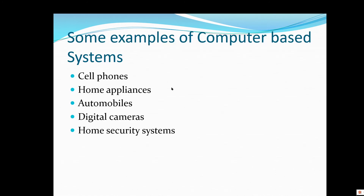There are other computer-based systems out there now — computer systems in all sorts of things. Modern automobiles have computers in them, which wasn't the case in previous years. There are other examples you could think of, like printers and other things.